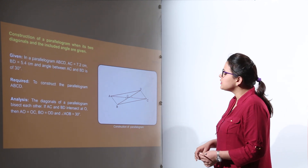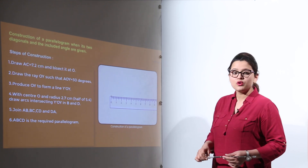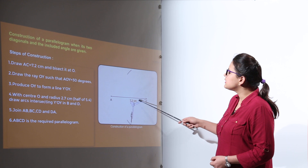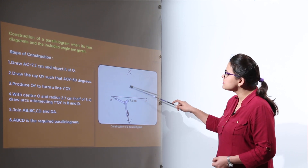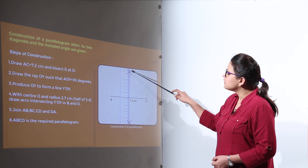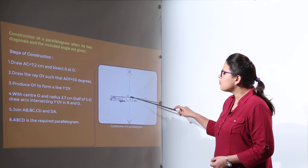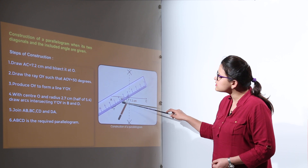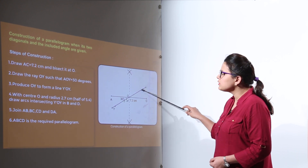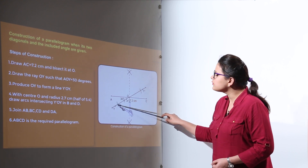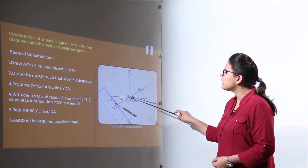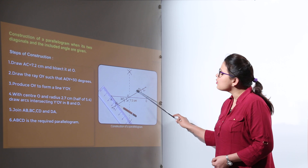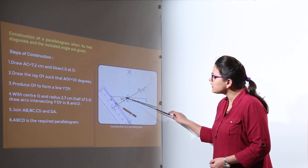For the construction steps, start with one diagonal. We start with AC, making it 7.2 centimeters. Bisect AC by taking more than half the radius with the compass, with A as center cutting arcs, then with C as center without changing the radius cutting the previous arcs. Join to bisect the line at O. From O, construct an angle of 30 degrees for the other diagonal by constructing 60 degrees and bisecting it to get 30 degrees. The measurement of the other diagonal BD is 5.4, so we draw 2.7 on each side of O and cut arcs on both sides, giving diagonal BD of 5.4 centimeters at 30 degrees to AC.